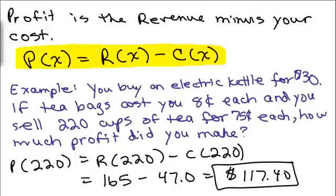After doing the multiplication and subtracting, we get $117.40. And note that's exactly the same answer we got when we just did the revenue separately and got $165, did the cost separately, got $47, and subtracted.